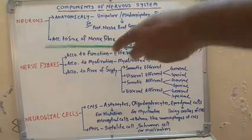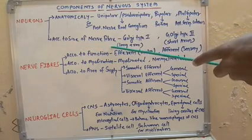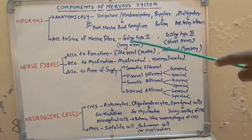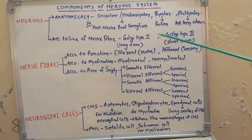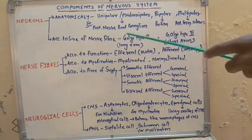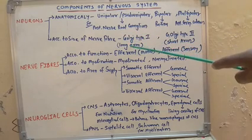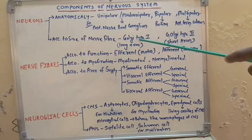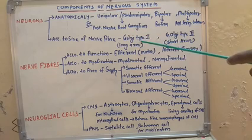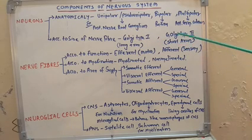Then, according to the size of the nerve, neurons can be classified into two types: Golgi type 1 and Golgi type 2. The nerve fibers which have a long axon are known as Golgi type 1, and those which have a short axon are known as Golgi type 2.